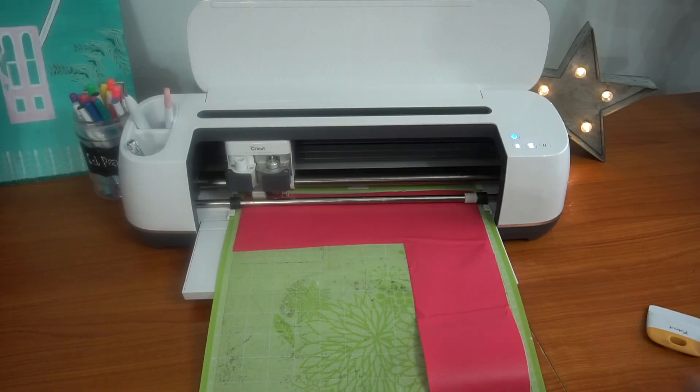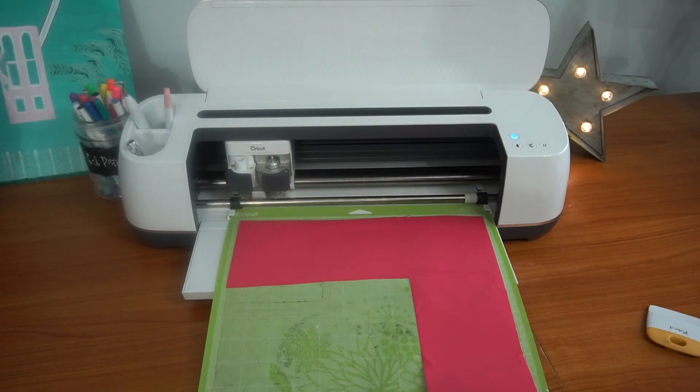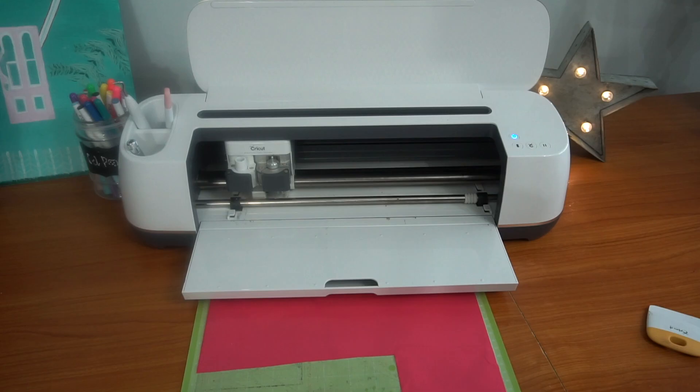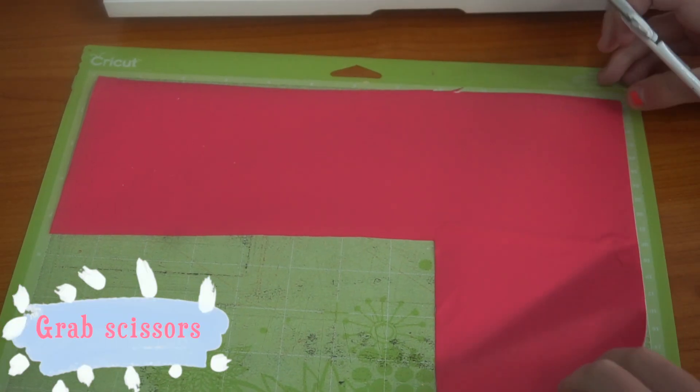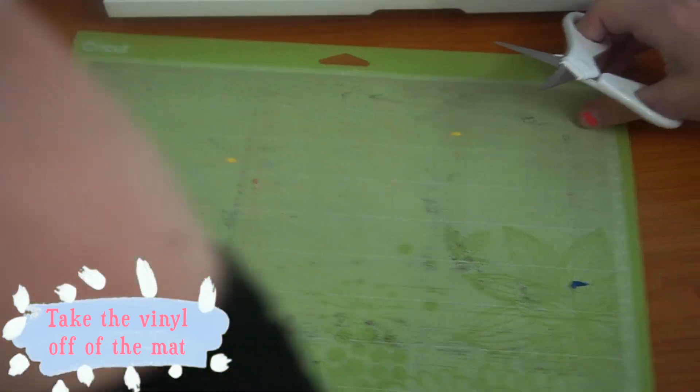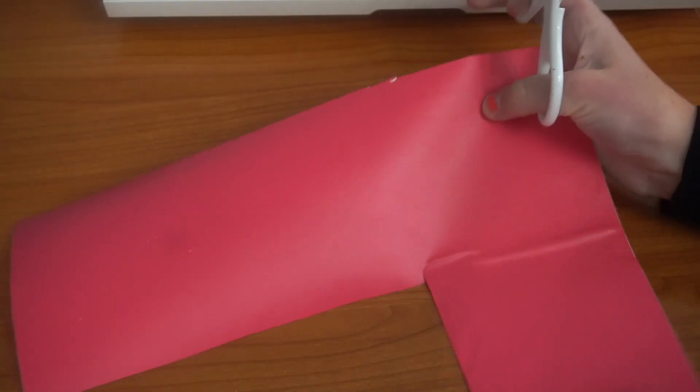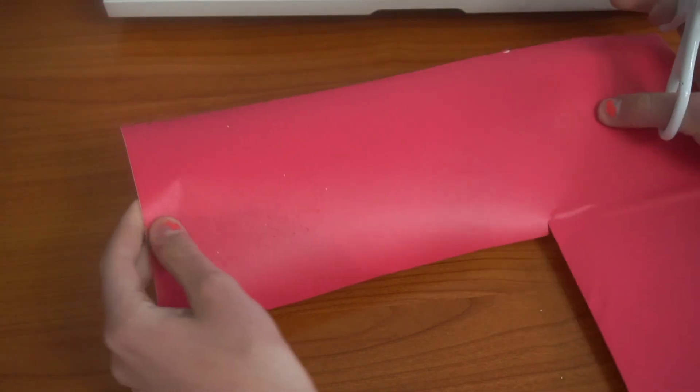After it's done cutting, unload the mat. Grab scissors. Take the vinyl off of the mat. To save the vinyl, cut around the image.